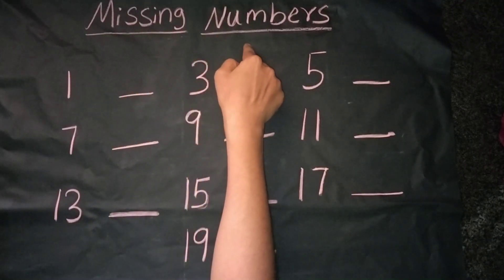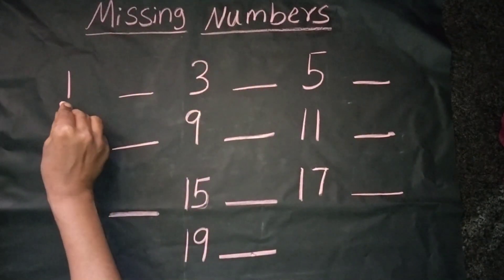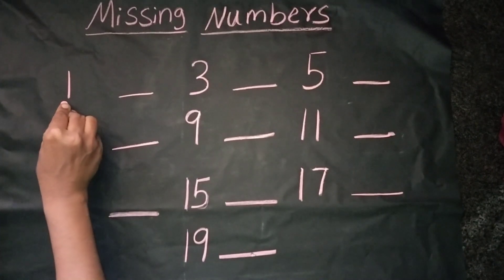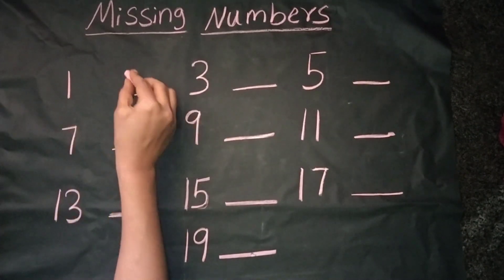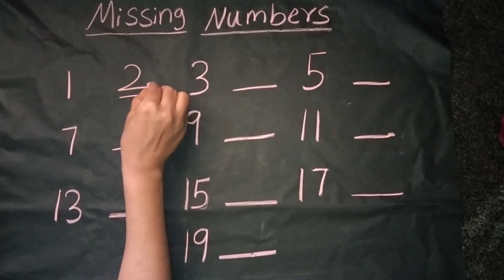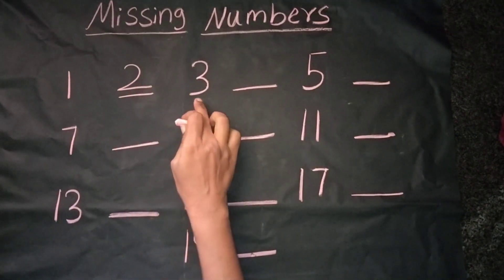Missing numbers 1 to 20. We can see the number 1. The next number is 2. Yes, it's correct. The number is 2.